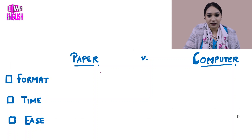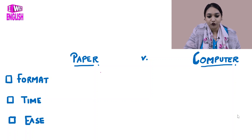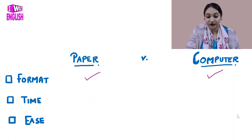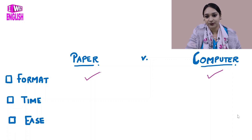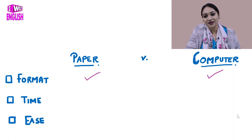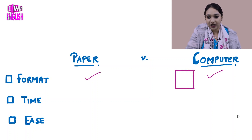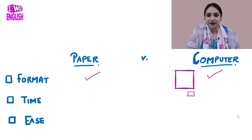Now let's discuss whether you should go ahead with paper IELTS or computer IELTS, and what is better for the writing module. The format is exactly the same in both. The only difference is that in paper IELTS you use a pencil and eraser, while in computer IELTS you type. One small advantage of computer IELTS is that you don't have to count your words manually — the word count is displayed in a small box at the bottom of the screen, saving you 2–3 minutes.